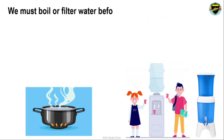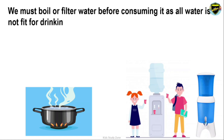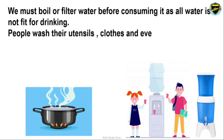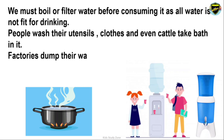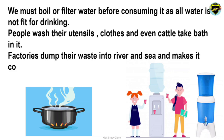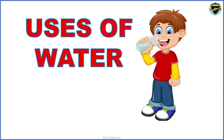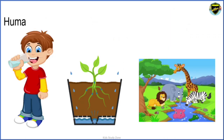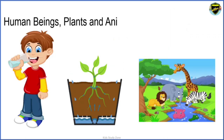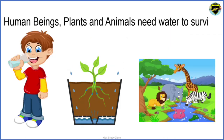We must boil or filter water before consuming it, as all water is not fit for drinking. People wash utensils, clothes, and even bathe in rivers, and dumping waste into rivers and seas makes the water very contaminated. Let us see the various uses of water — human beings, plants and animals all need water to survive.